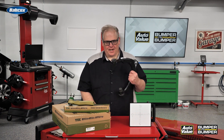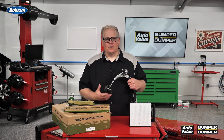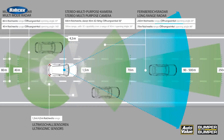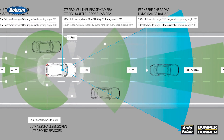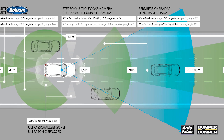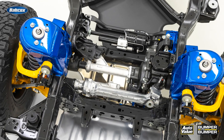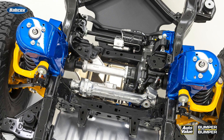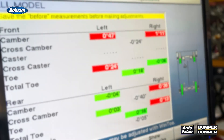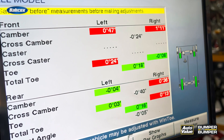You may not think that a chassis part is related to the ADAS system on a vehicle, but it is. Anytime the alignment angles change on a vehicle, you're possibly changing the thrust angle or total toe on the vehicle.